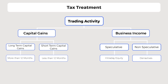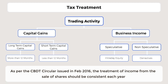In some situations, a trader can report delivery-based equity trading under income from business and profession, considering it is classified as non-speculative business income, and the same treatment is followed for subsequent years. As per the CBDT circular issued in February 2016, the treatment of income from the sale of shares should be consistent each year.